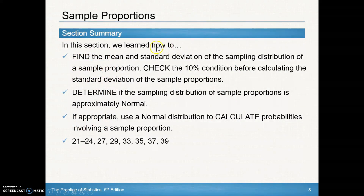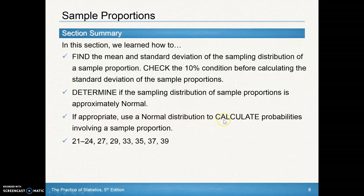So there we go. In this section we talked about the mean and the standard deviation of a sampling distribution and got those two new formulas. Remember to check the 10% condition — that 10 times our sample size is less than or equal to our population — and determine that the sampling distribution is approximately normal by checking that n times p and n times q are both greater than or equal to 10. If so, we can use a normal distribution to calculate probabilities involving a sample proportion. Good luck and see you in the next video.